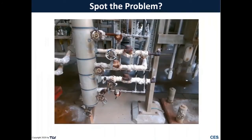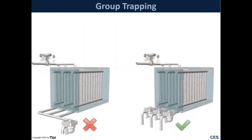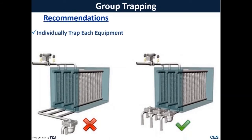Here's another example where multiple tracing lines drain to common steam traps in a manifold. Two tracer circuits go to one steam trap — one circuit can drain while the other backs up condensate due to different loads and pressure drops across the circuits, potentially leading to decreased process temperatures and thermal maintenance issues. The solution to group trapping is simple: individual steam traps on each piece of steam-using equipment. Each section of an air coil needs a separate trap, and each tracer circuit needs its own steam trap to optimize heating.